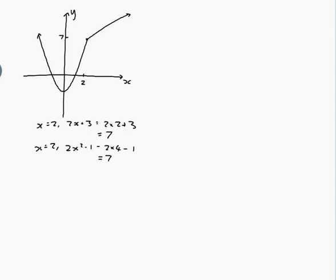My graph tells me that the limit actually does exist when x is 2, because my graph goes to the same place when I come in from both sides. It also tells me that the derivative doesn't exist, because when I come in with the slope from both sides I get different answers. But we should be formal about it.